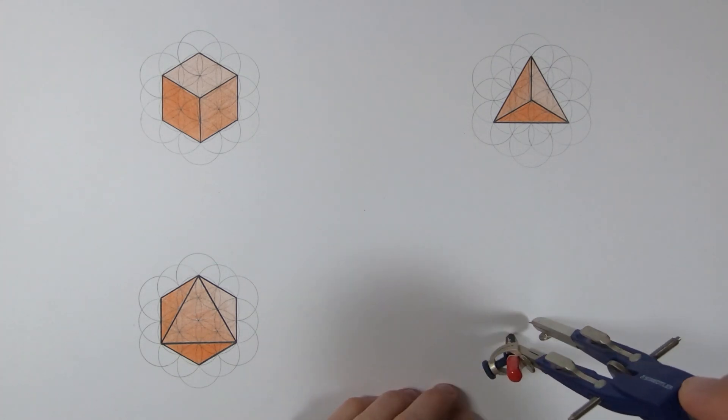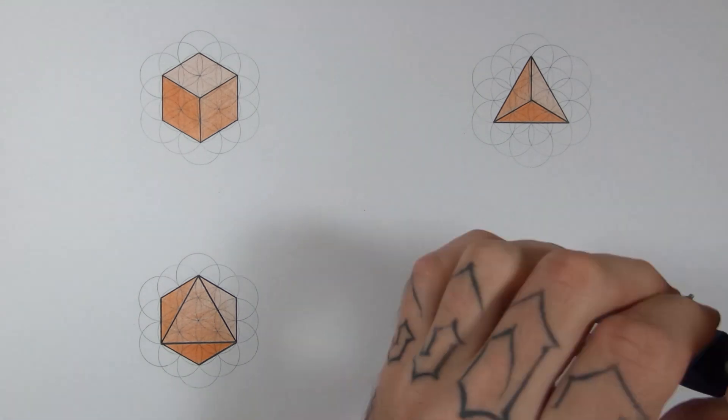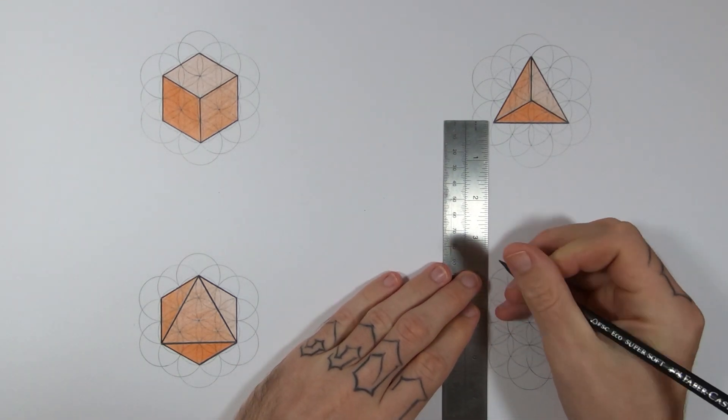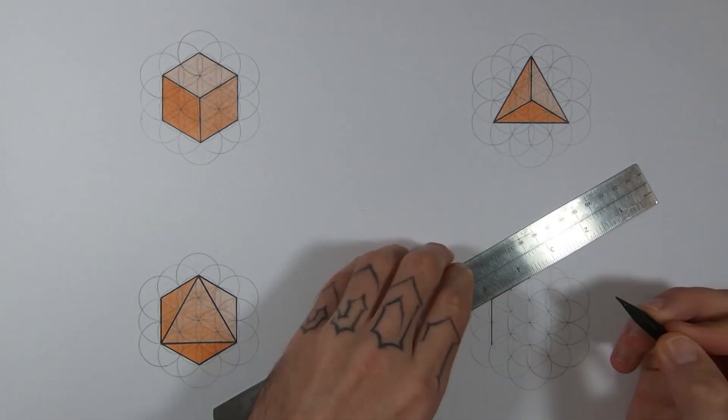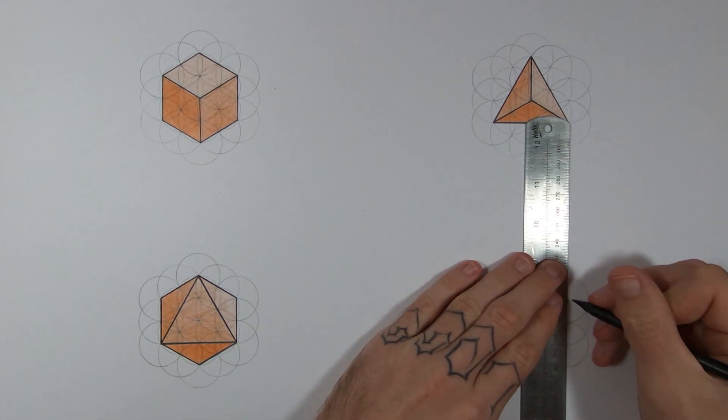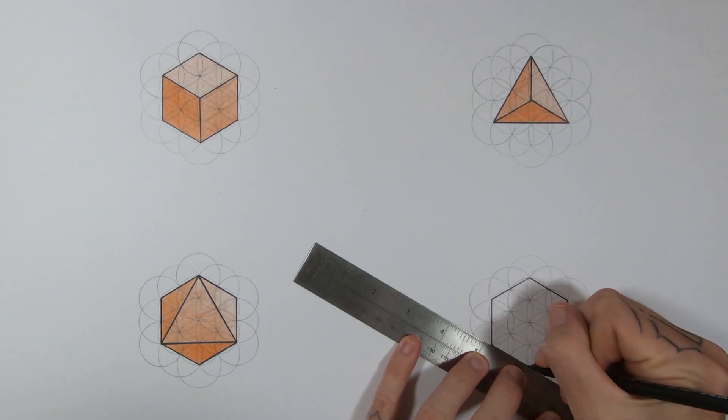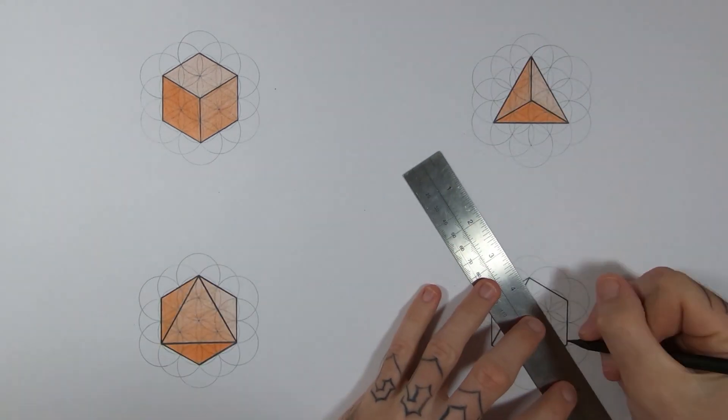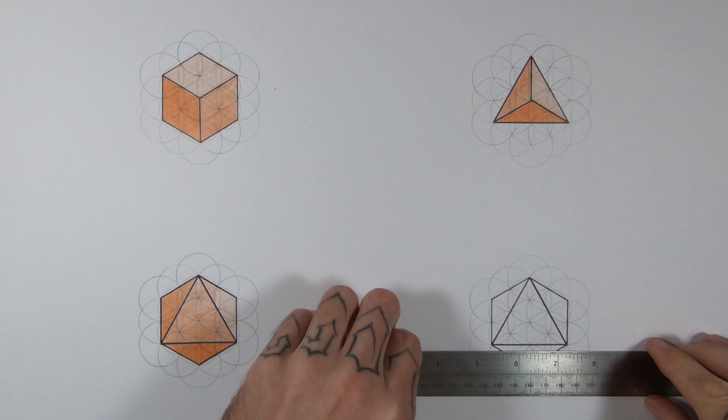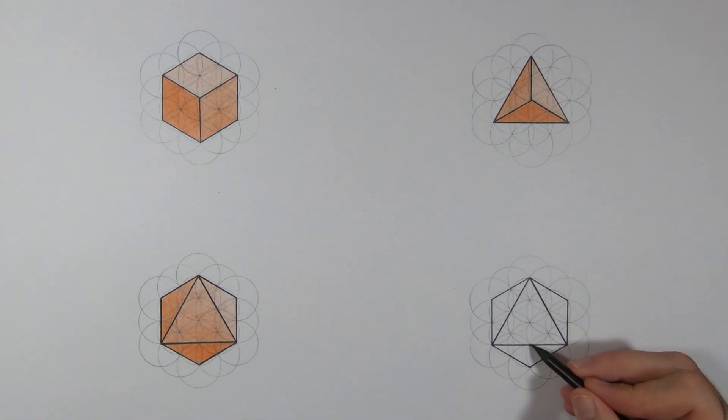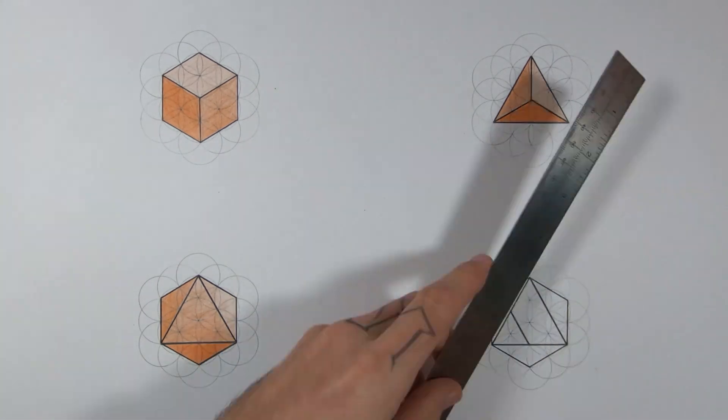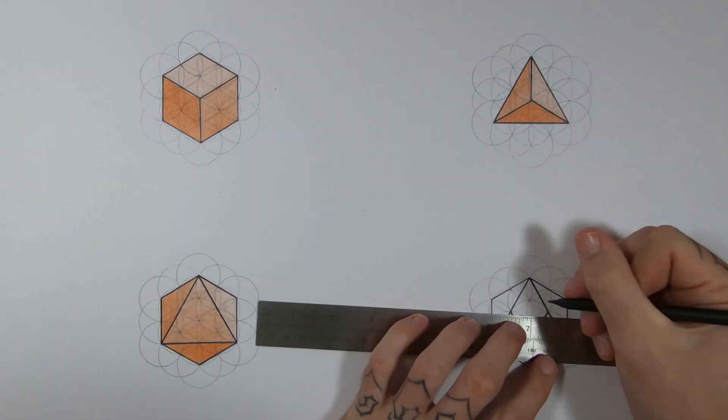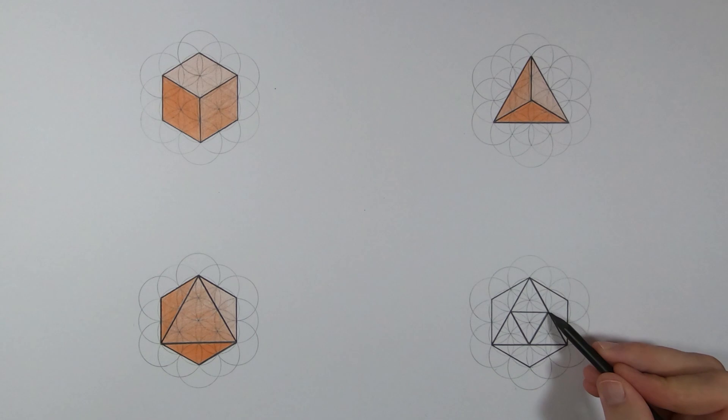Now icosahedron, again flower of life with 19 circles. Again draw the hexagon and the triangle, but now inside the triangle you're going to draw another triangle the other way around using the center of each line. If you connect the center points of each line to each other it makes a triangle, and then all you got to do is connect the corners and you've got your icosahedron.